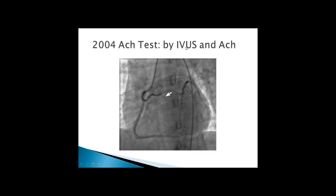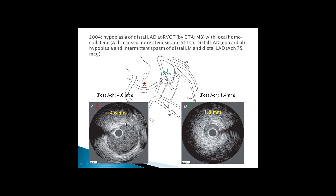After intracoronary nitroglycerin initial image, acetylcholine testing was done, also with IVUS, causing severe pain. There was severe spasm at the level of the LAD. Intravascular ultrasound showed the proximal left main diameter at 4.6 mm and the pre-pulmonic LAD at 1.8 mm normally, reducing to 1.4 mm with acetylcholine. Basically there was near total occlusion of the left main with acetylcholine.